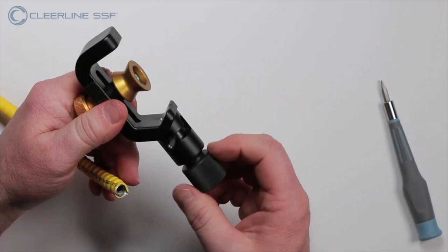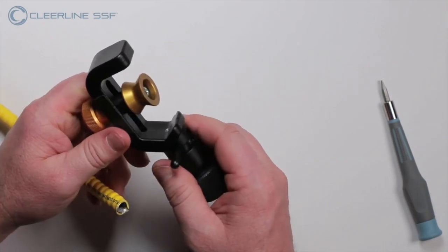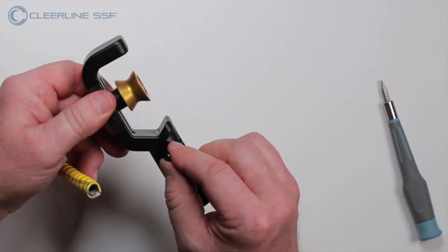Next, loosen the blade thumb screw to lower the blade completely and ensure the blade setting lever is turned opposite the V-groove.